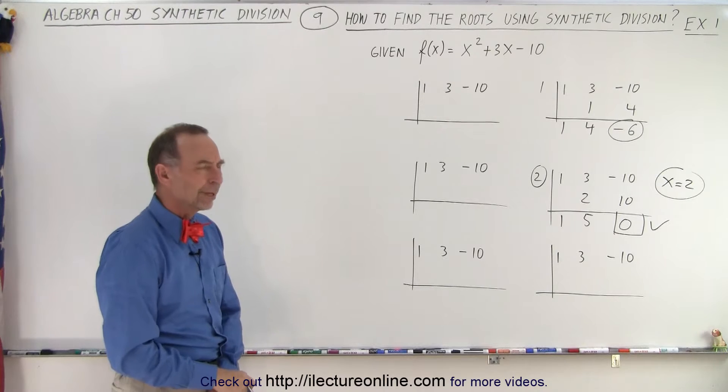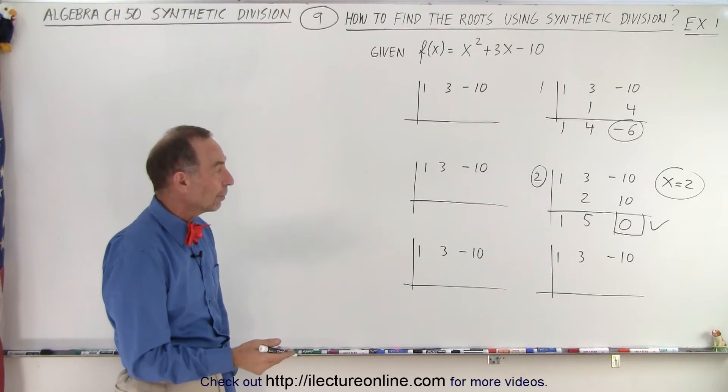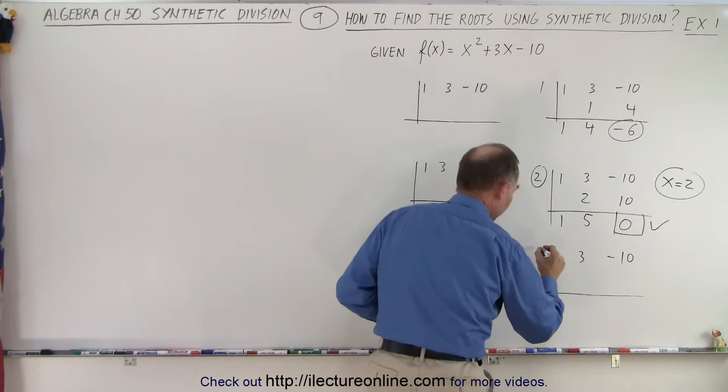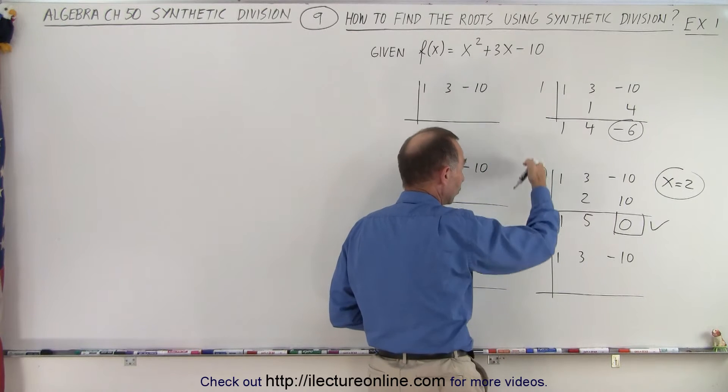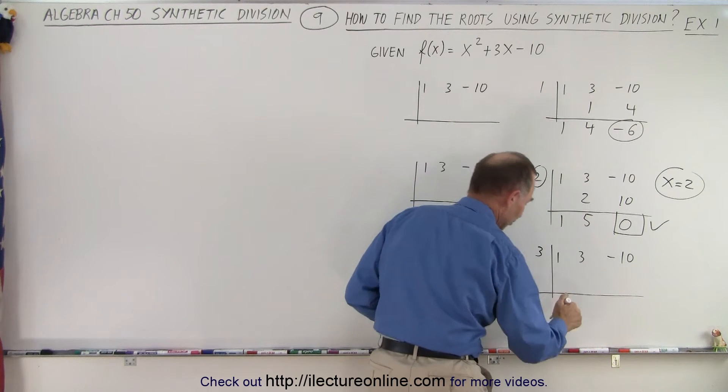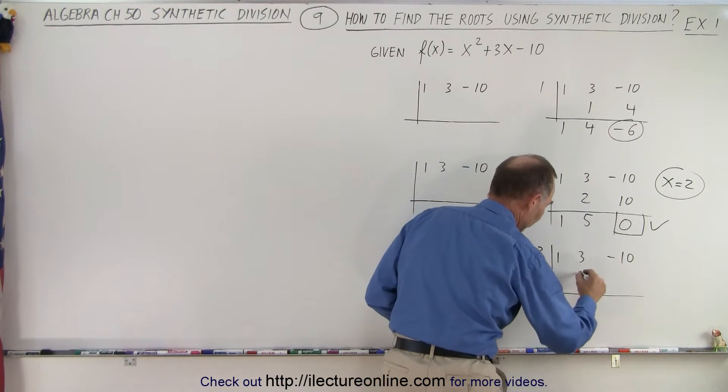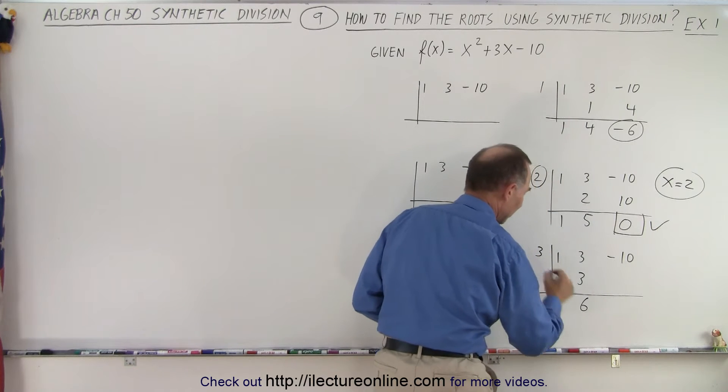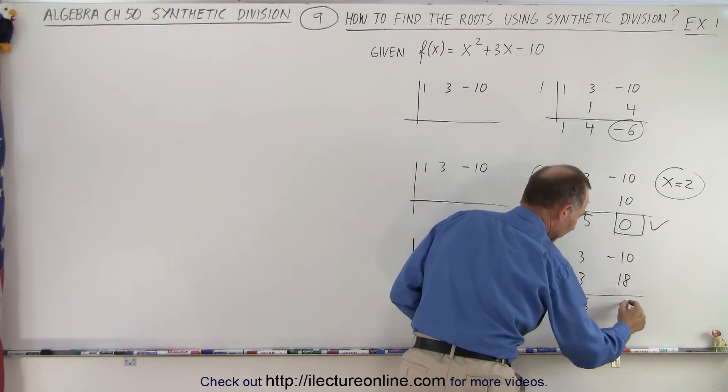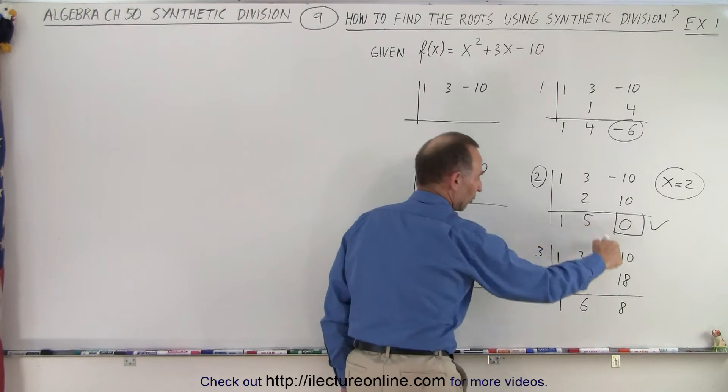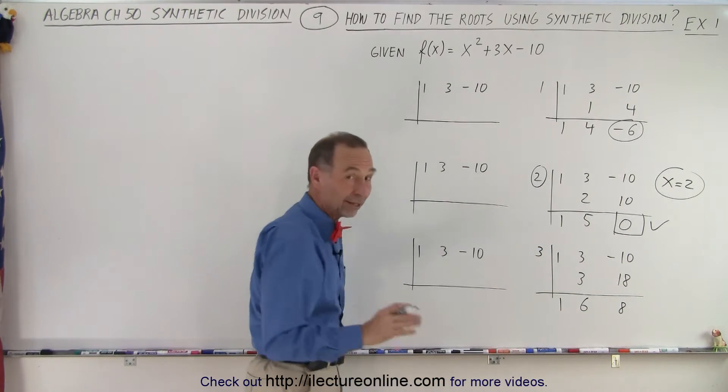Hmm, so what happens when I keep increasing the numbers? What if I try the number 3? Because I went 1 to 2 to 3, I see what happens. I drop down the 1. 3 times 1 is 3. Add them together, it's 6. 3 times 6 is 18. Add them together, I get 8. So I went from 0 to 8. I need to find the other 0.